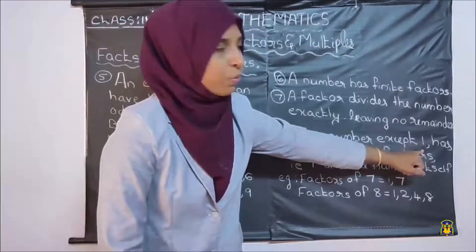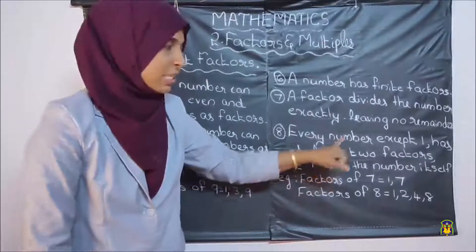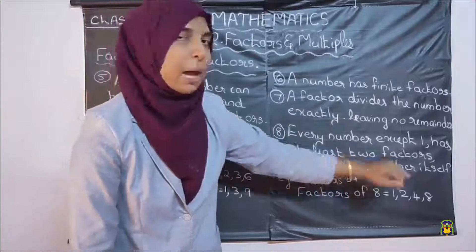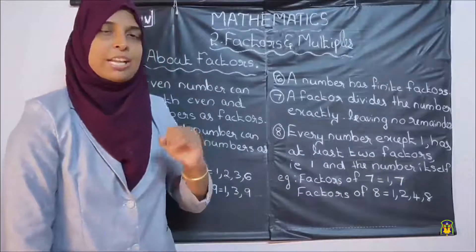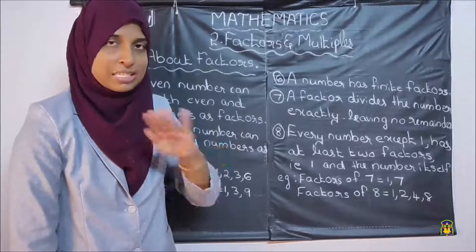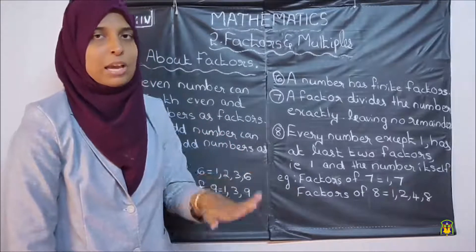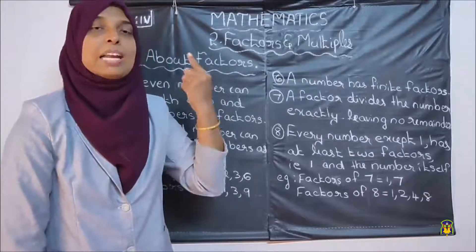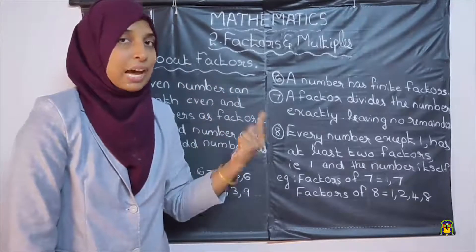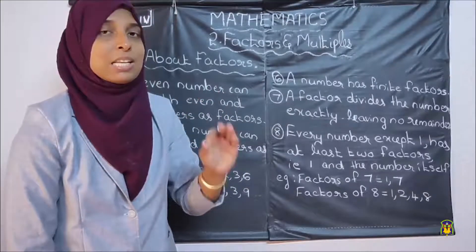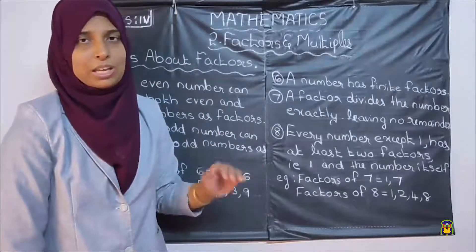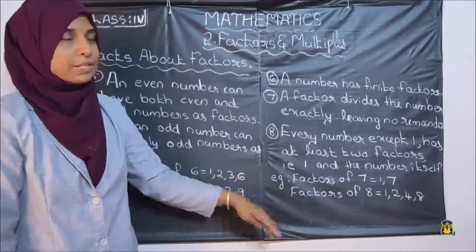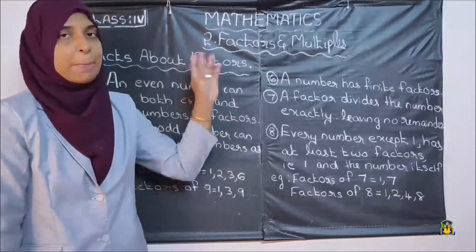Eighth point: every number except 1 has at least 2 factors — that is, 1 and the number itself. If you take any number except 1, then 1 and that number itself will be factors, so at least 2 factors will be there. I hope all of you understood these 8 important points — these are the facts about factors.